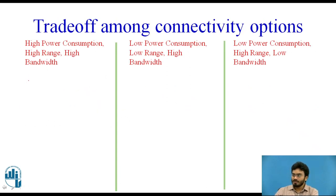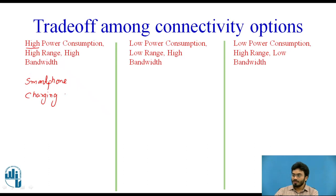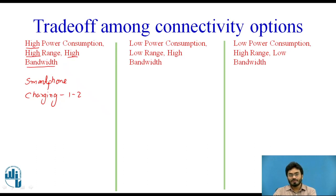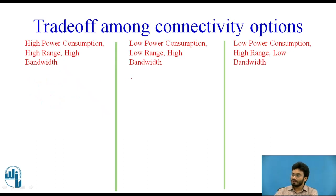Here we compare the trade-offs between connectivity options. High power consumption, high range, and high bandwidth — consider a smartphone transmitting live video. By high power we mean it needs frequent charging, perhaps every one or two days. It has high range due to cellular connectivity and very high bandwidth since 3G and 4G are available in today's smartphones, giving these devices the capacity to use that high bandwidth.